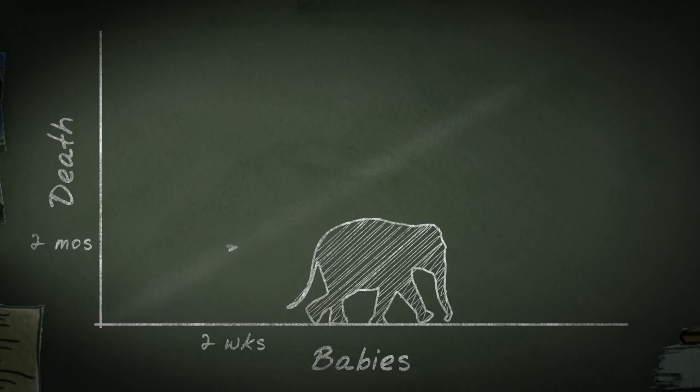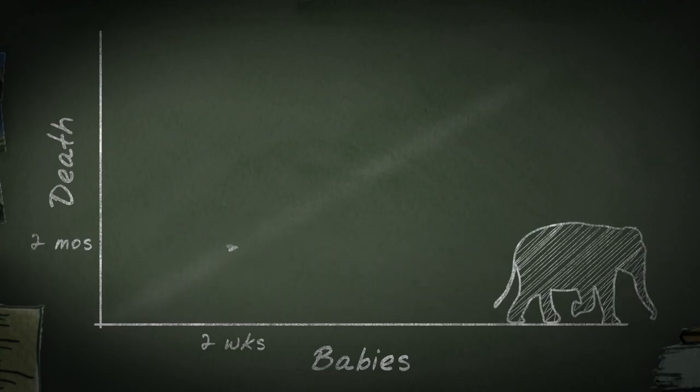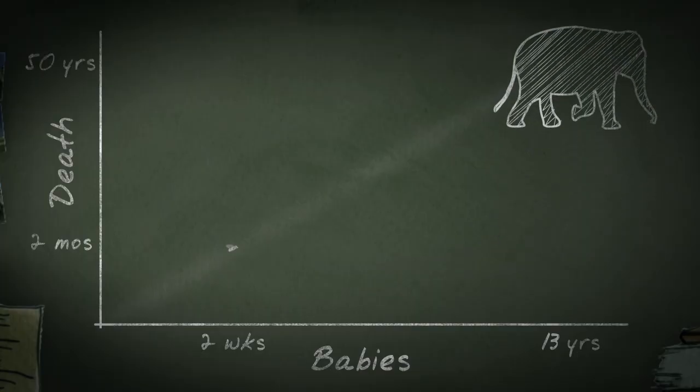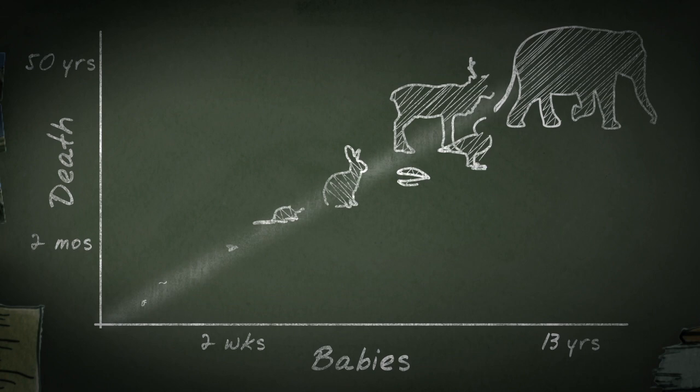If you're a huge elephant, you wait 13 years to have your babies, you live for another 40 or 50 years, and then you die right around here. And this is true across the animal kingdom, except when it comes to hydra.